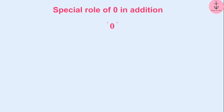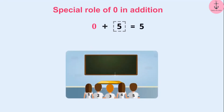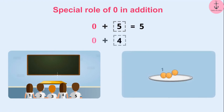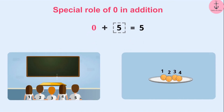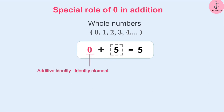0 has a special role in addition. If any number is added to 0 — for example, if 5 students enter an empty class, or if we put 4 laddos in an empty plate — then the result will be the same whole number which is added to 0. Because of this reason, 0 is called an identity for the addition of whole numbers. 0 is the additive identity, also called an identity element, or simply identity.